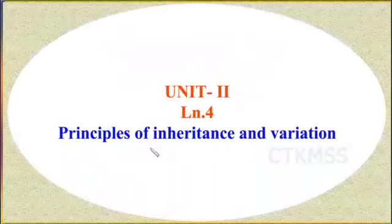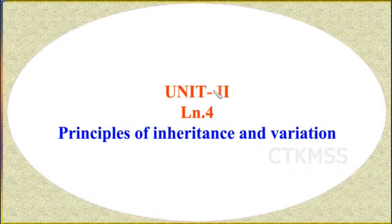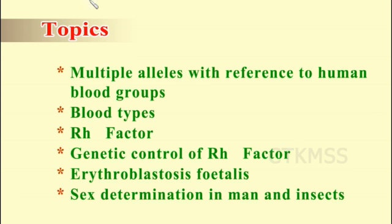Good morning students. Today we are going to start Unit 2, Lesson 4, Principles of Inheritance and Variation. The topics we are going to learn today are multiple alleles with reference to human blood groups, blood types, RH factor, genetic control of RH factor, erythroblastosis fetalis, and sex determination in man and insects.